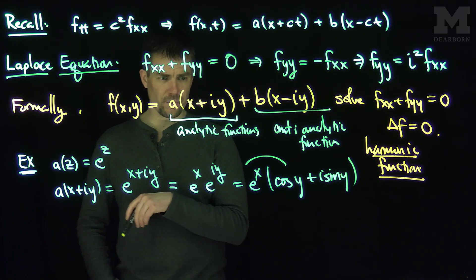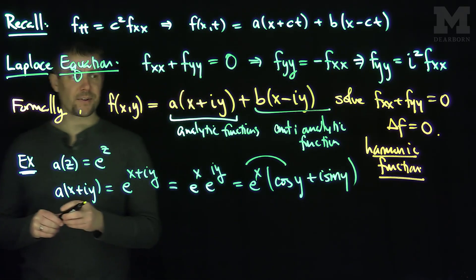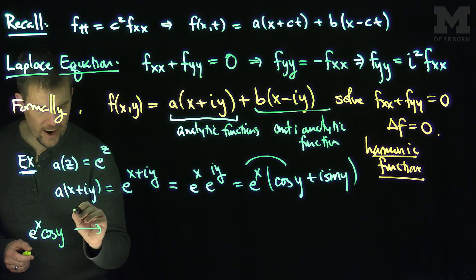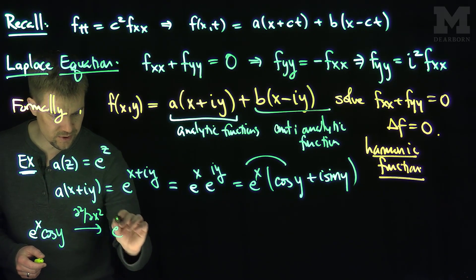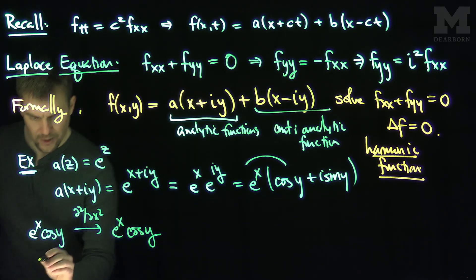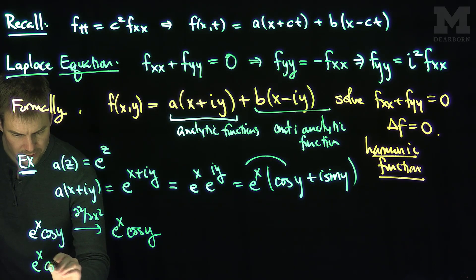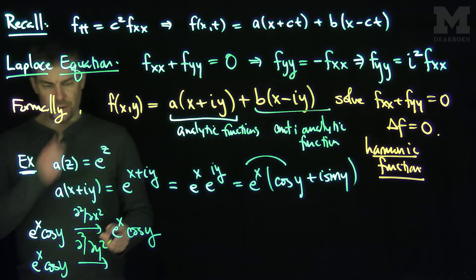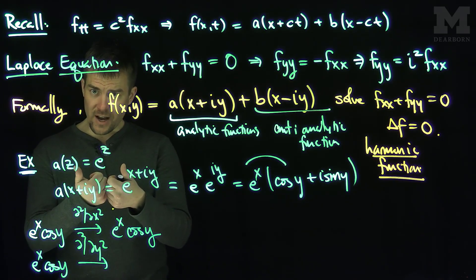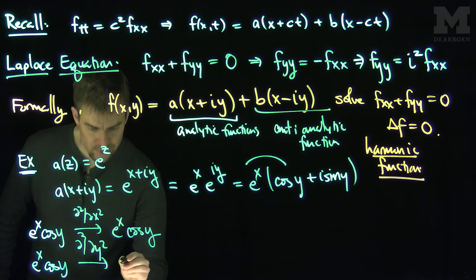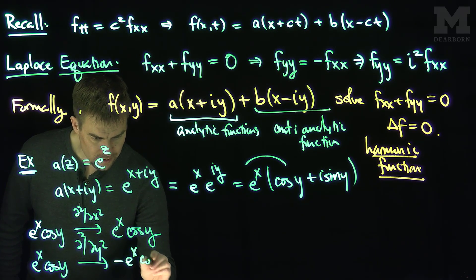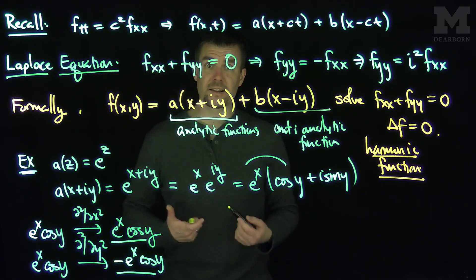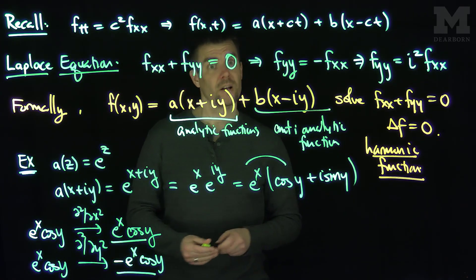Let's at least check this first term over here, this e to the x cosine y. Does that satisfy the Laplace equation? Let's check. If I do two x derivatives of this, it's easy to see that two x derivatives are just going to be the exact same thing, e to the x cosine of y. If I do two y derivatives, what will happen to this cosine? The cosine will first turn into negative sine, and then the derivative of negative sine is negative cosine. So this will be negative e to the x cosine y. And lo and behold, when I add the second x derivative to the second y derivative, I get zero. So in fact, e to the x cosine y is a harmonic function.